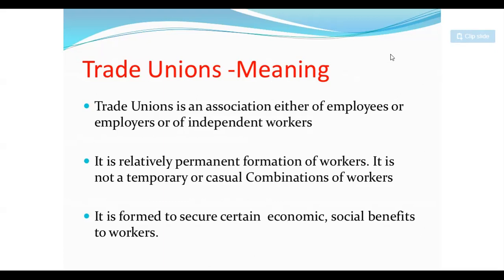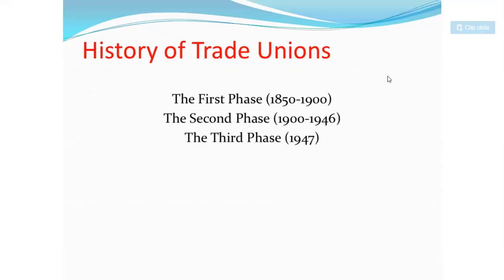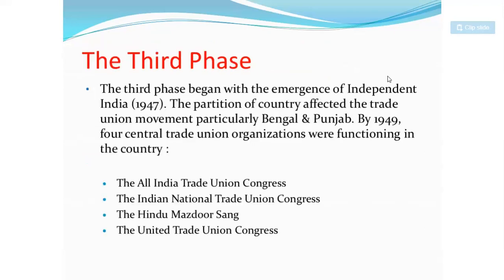Now let's discuss the history of trade unions. There are three phases: the first phase is from 1850 to 1900, the second phase is from 1900 to 1946, and the third phase is from 1947 onward. We will mainly discuss the third phase because it starts after independence and there was a big boom in trade unions.